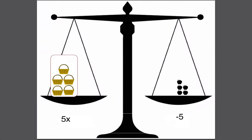So now we have five unknown baskets and five rotten apples. So let's divide by five and what do we get?